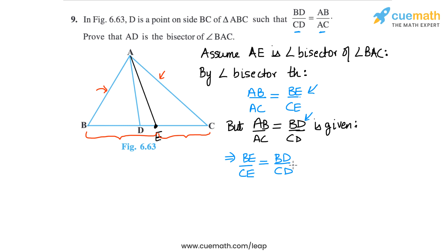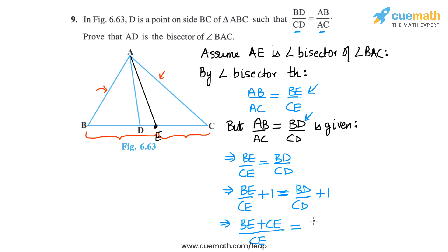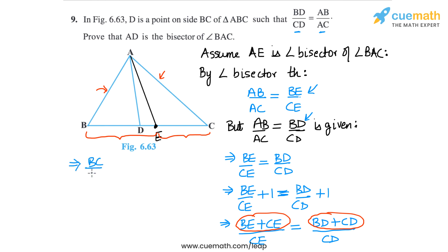Let's prove that E and D are exactly the same point. Adding 1 to both sides: BE/CE + 1 equals BD/CD + 1. Taking LCM gives (BE + CE)/CE equals (BD + CD)/CD. Now BE + CE is simply BC, and BD + CD is also BC, so we get BC/CE equals BC/CD.